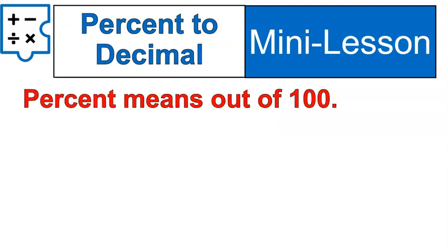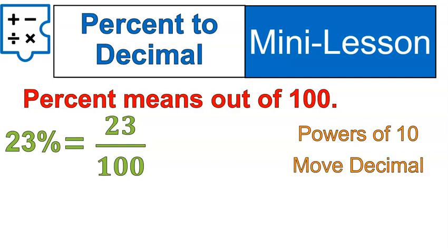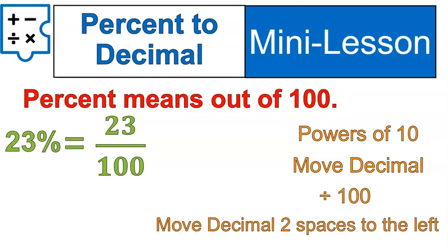Percent to decimal. Percent means out of 100. So 23 percent means 23 out of 100. Now if you remember back to our lesson on powers of 10, if you're dividing by 100, you're moving the decimal. When you divide by 100, you move the decimal two spaces to the left. So that's all we need to do with 23. Notice with this one 23 percent, the 23 had a decimal at the end that was not written in, but we moved that decimal two spaces to the left. So now it's 0.23.